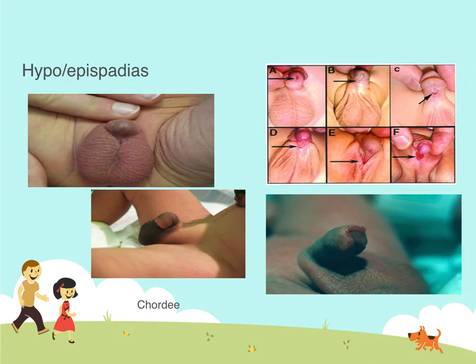Here are some pictures. You have to look very closely at the one on the upper left — you can see that the meatus is on the lower aspect of the glans penis. A, B, C, and D are a variety of other pictures showing where the meatus is located. On the bottom, we have two examples of a chordee. On the bottom right, you can notice that the foreskin is present on the top of the penis but absent on the lower aspect.